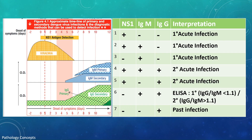This picture shows positivity of antigen and antibody and its interpretation. In primary acute infection, either NS1 is positive, or both NS1 and IgM are positive, or only IgM is positive. If all three — NS1, IgM, and IgG — are positive, it indicates secondary acute infection. If NS1 and IgG are positive and IgM is negative, it is also a secondary acute infection.